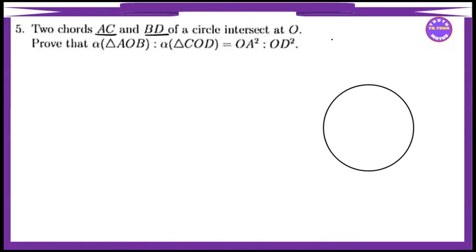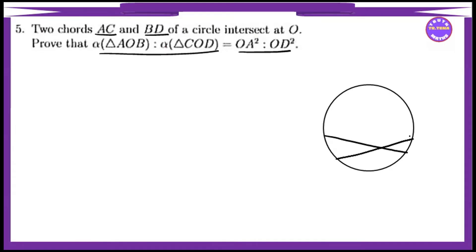The area of triangle AC is equal to the circle. The circle: we can see the line between the cut and the point of division. The area we have here is to cut AC and BD. This essentially sees AC and BD. This is O, and this is O. This is O. This is O.